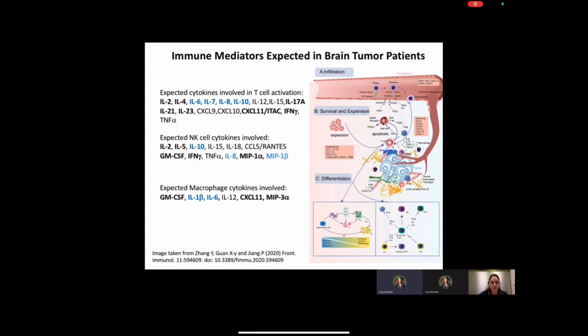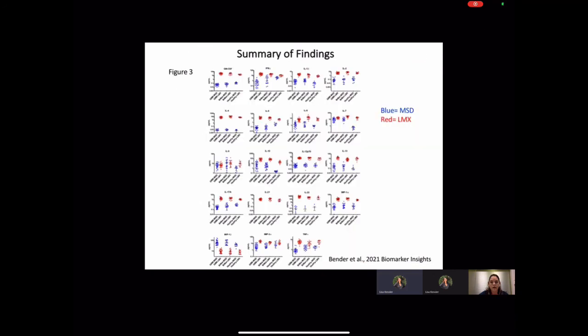In summary, we found that both platforms identified biomarkers that were altered in tumor-burden groups, but the Luminex platform was able to quantify 100% of the samples. This is Figure 3 from our paper, and it illustrates the comparisons of all the 19 shared analytes. The blue dots are the picogram per milliliter concentrations as determined by the MSD platform, whereas the red dots are picogram per milliliter concentrations determined by the Luminex assay.